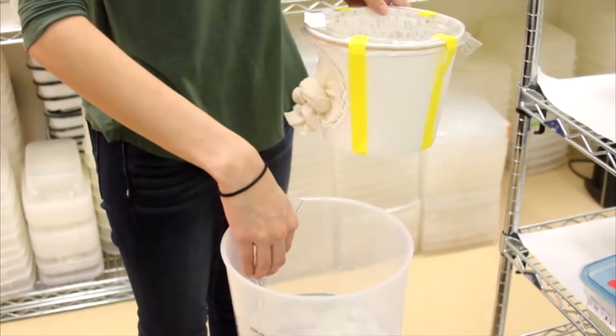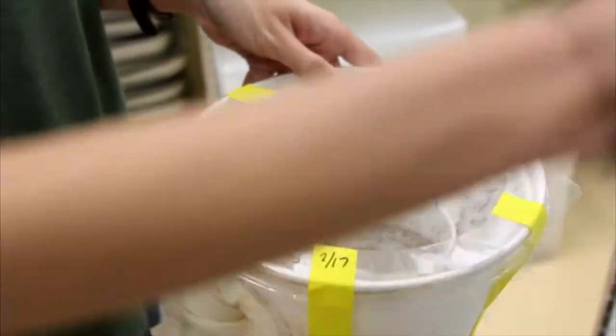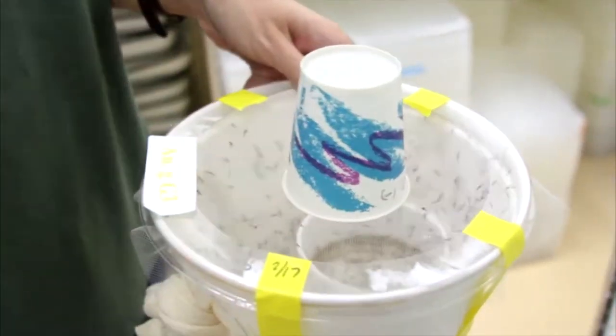Place a damp cotton ball with a 0.3 molar sugar water solution on top of the cage and cover the cotton ball with a cup to prevent it from drying out.